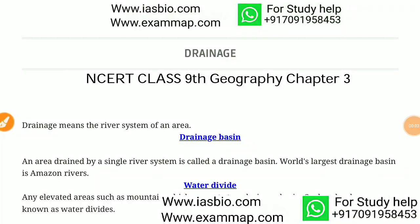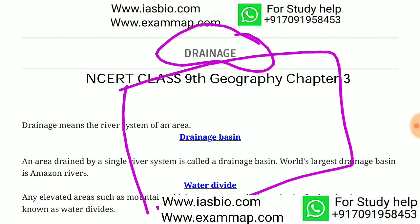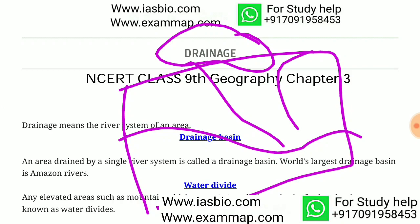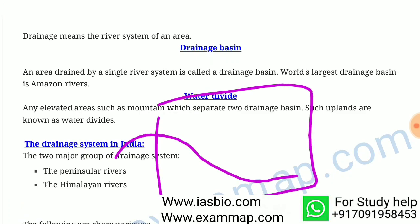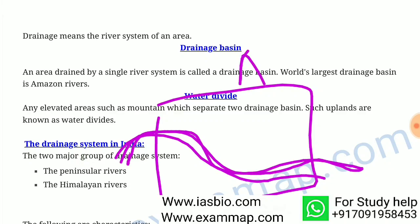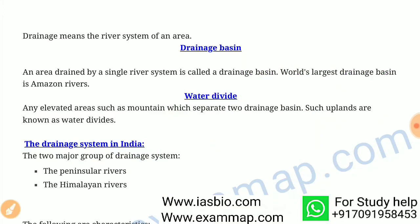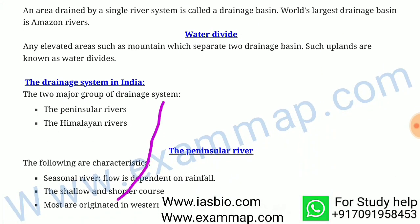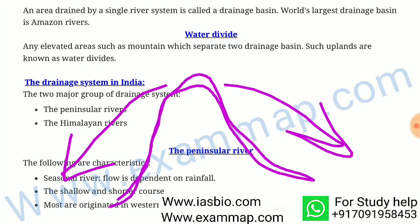Welcome back class to the third chapter of class 9th geography: Drainage. Drainage means the river system of an area. A drainage basin is an area which is drained by a single river system. The Amazon river basin is the world's largest drainage basin. A water divide is an elevated area such as mountains which separates drainage basins.